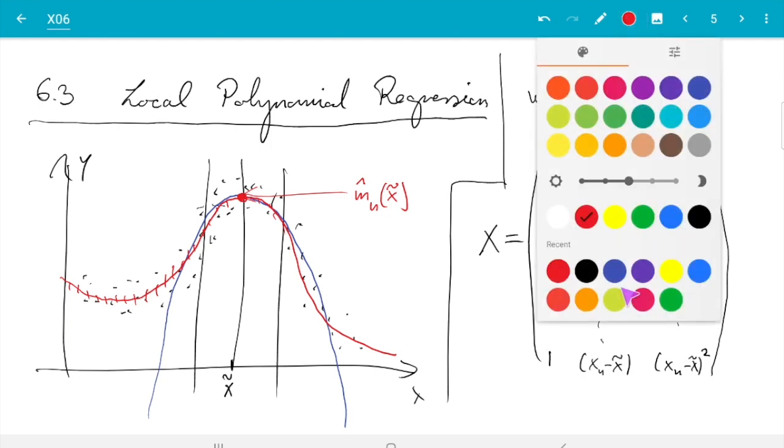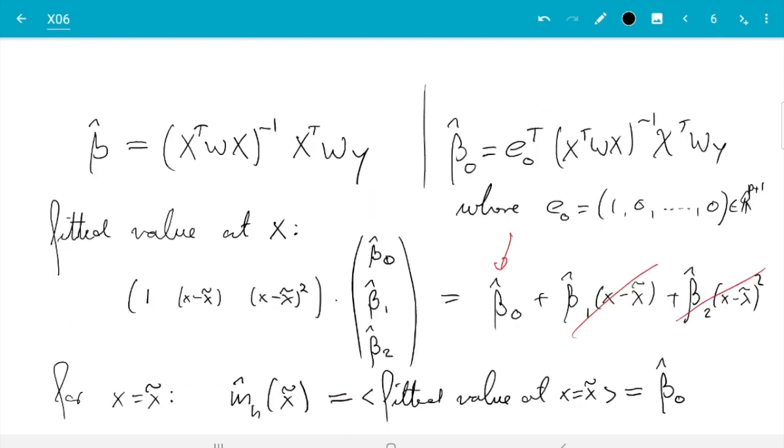And I want to just very quickly make a few comments. So the smallest possible case in a sense is p equals zero. Then we would have y equals beta zero, no more terms, a degree zero polynomial is a constant plus epsilon. And if you go through the algebra, you will find that gives you back the Nadaraya-Watson estimator. I show you the algebra in the notes, so please have a look there.